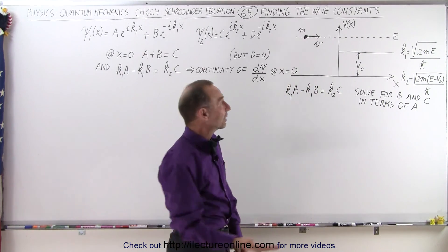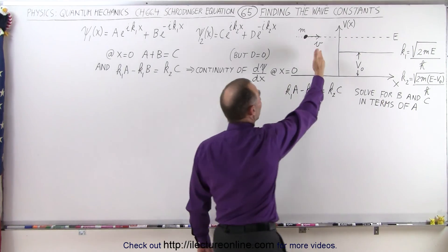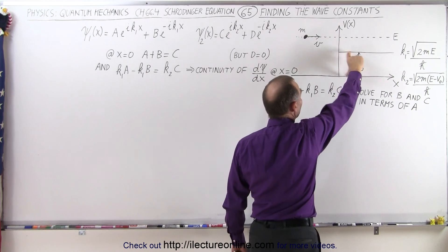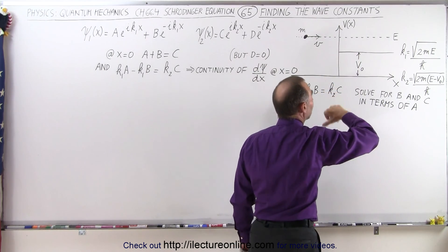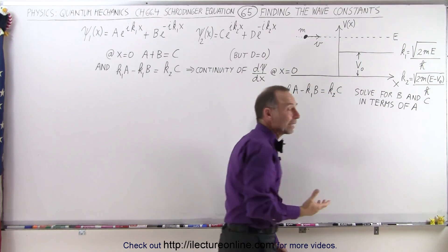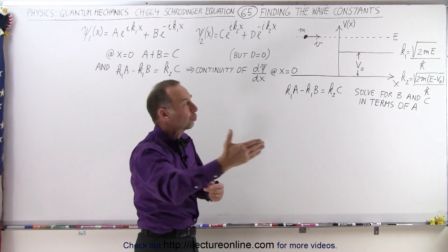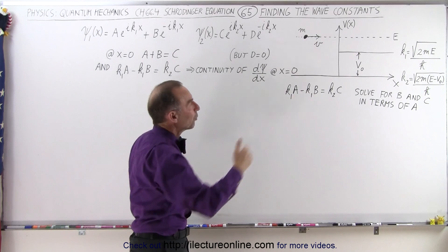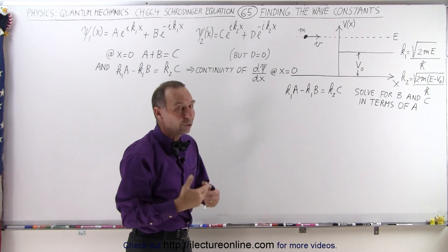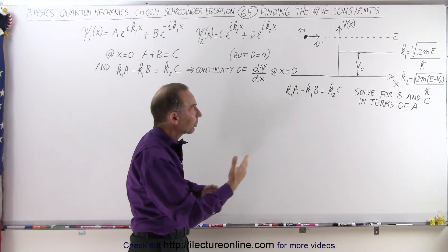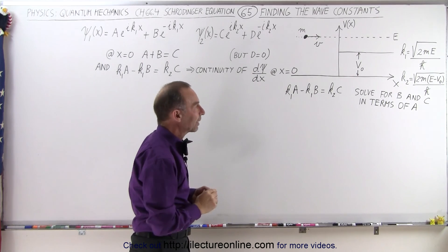Why should particles be reflected if the particle energy is greater than the barrier energy? In classical mechanics, of course, all the particles will continue to the right. But in quantum mechanics, part of the particles will be reflected.